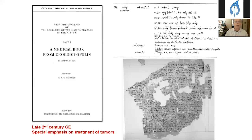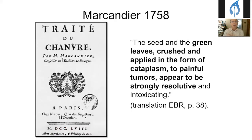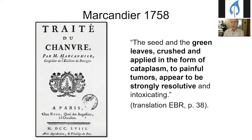Jumping back to Egypt, in the second century, this is a Coptic book which refers to meshy, or cannabis, with numerous citations and special emphasis on using it to treat tumors. From Europe, in 18th-century France, Marc-André noted that the seed and green leaves crushed and applied as a cataplasm to painful tumors appeared to be strongly resolutive and intoxicating — another claim for benefit on tumors.